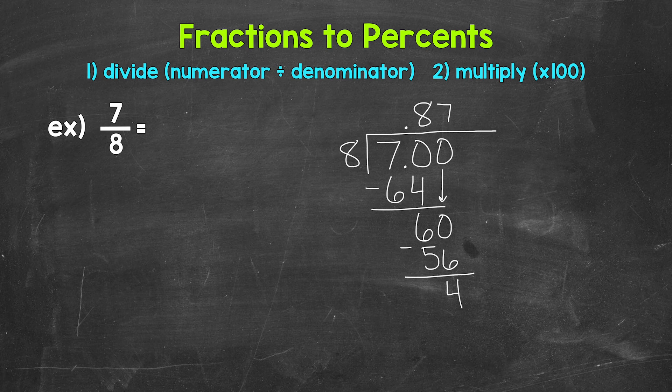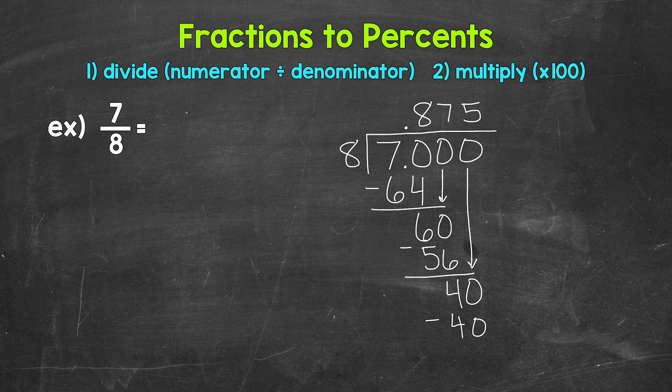So we don't have that clean cut zero there at the bottom yet. So let's use another zero that we can bring down in order to continue on. And now we have 40 divided by 8, which is 5. So we put 5 up top here, multiply 5 times 8 is 40, subtract 40 minus 40 is 0. So we have that clean cut zero there at the bottom and nothing else to bring down within our problem. So we are done.